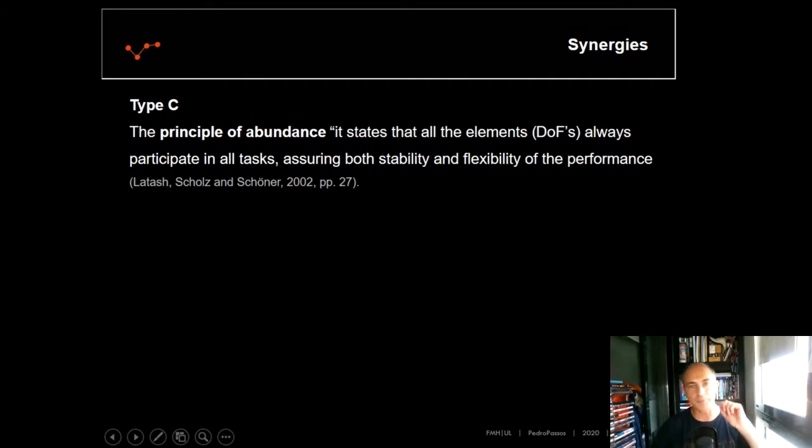And then we have Type C. Type C is the kind of synergies that we will address in sports performance. It is well supported by the principle of abundancy, that states that all the degrees of freedom, in some way, all participate in all tasks.